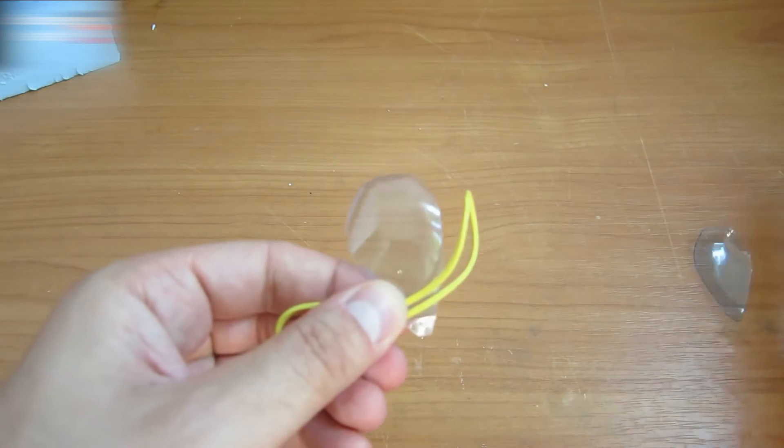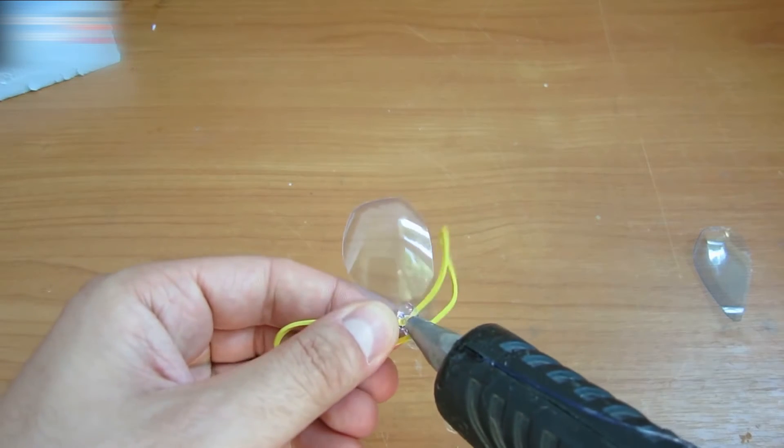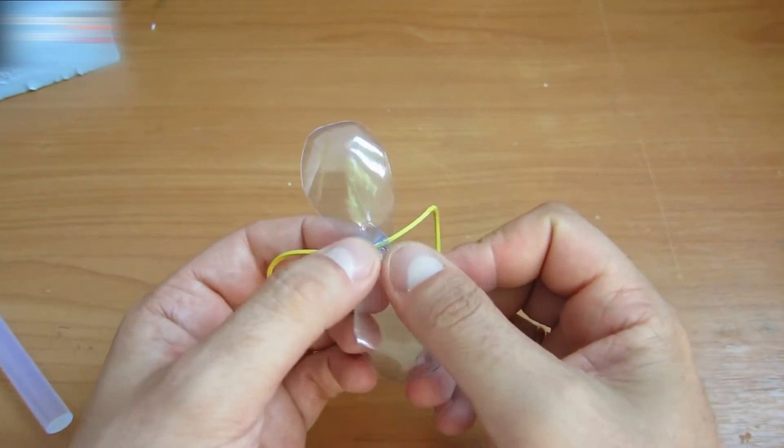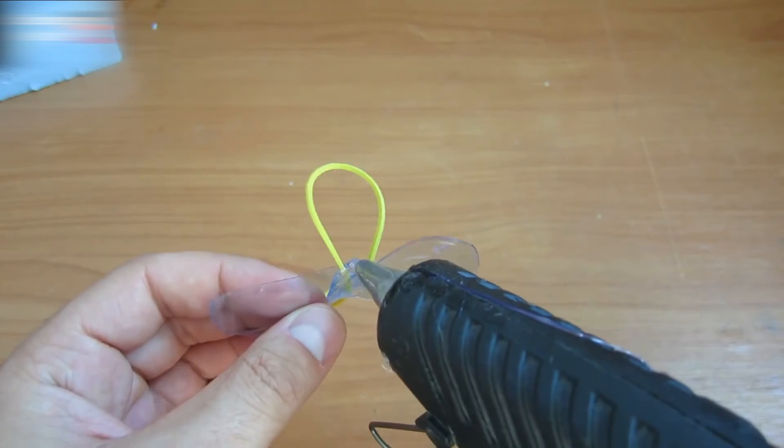Take the rubber band and attach it to the spoon part like this with a glue gun. Attach the second spoon part this way. Glue it too.